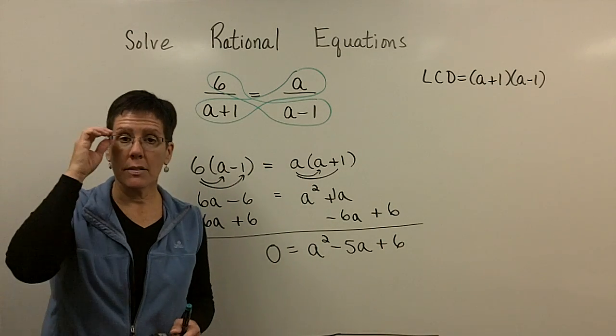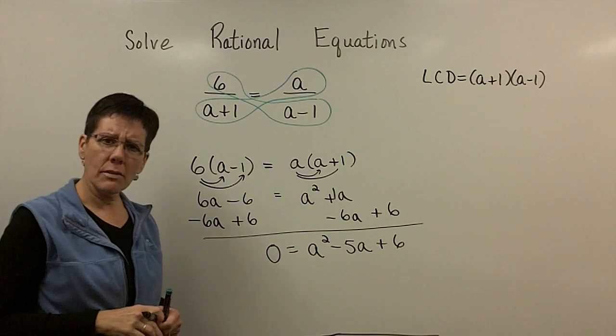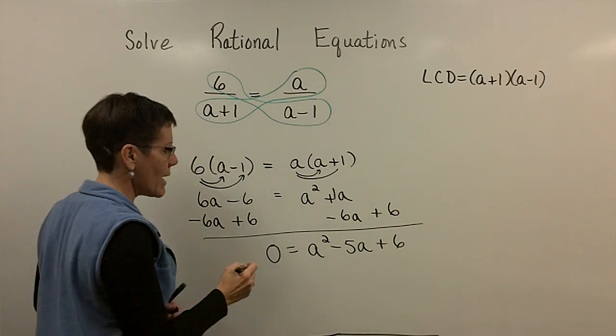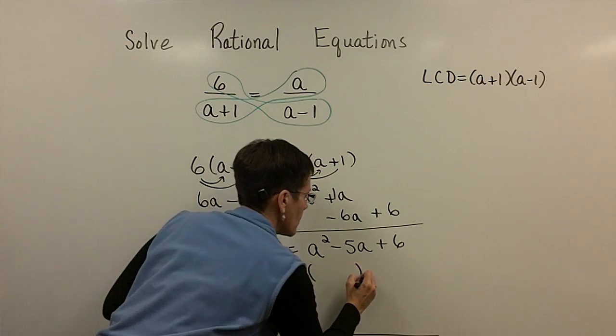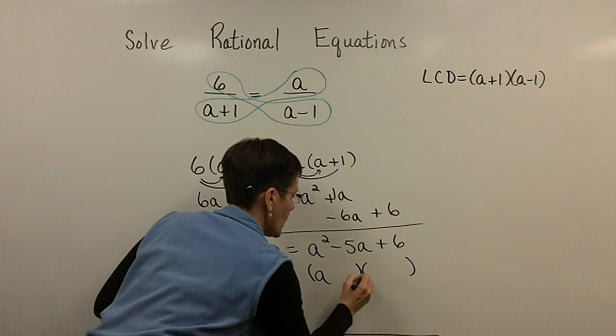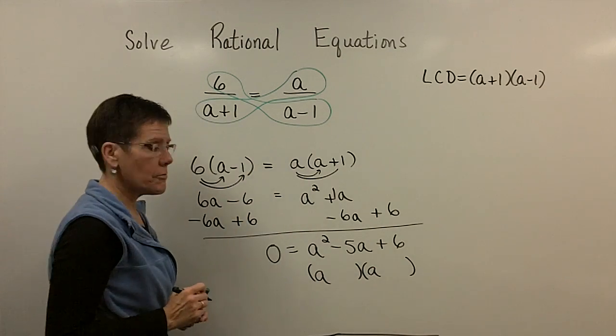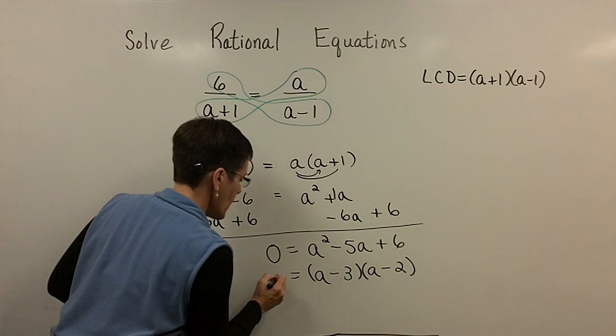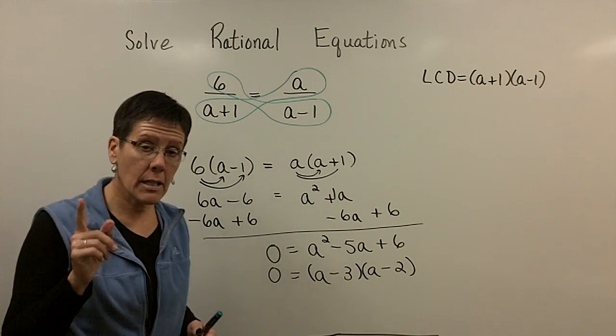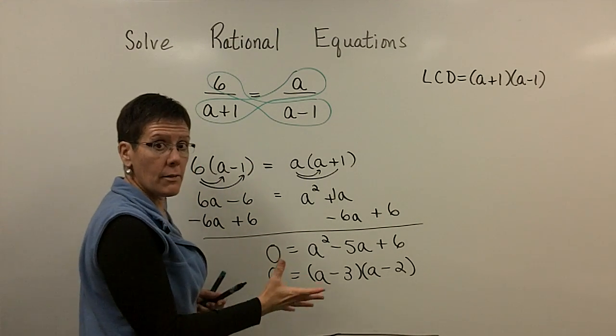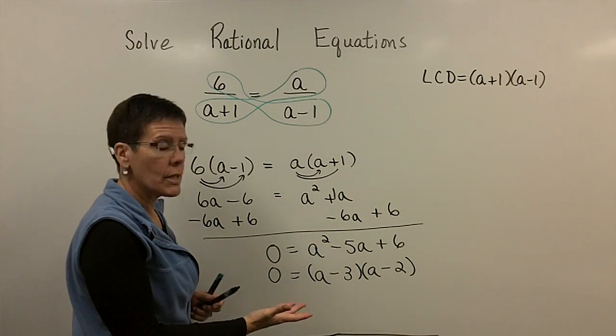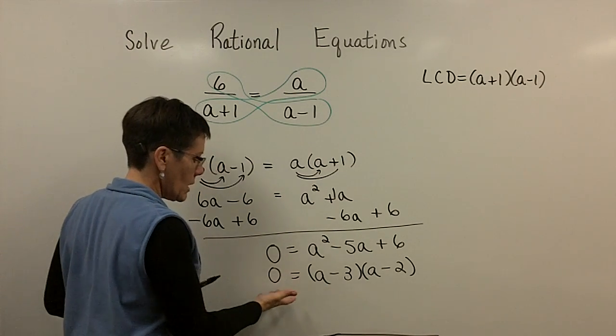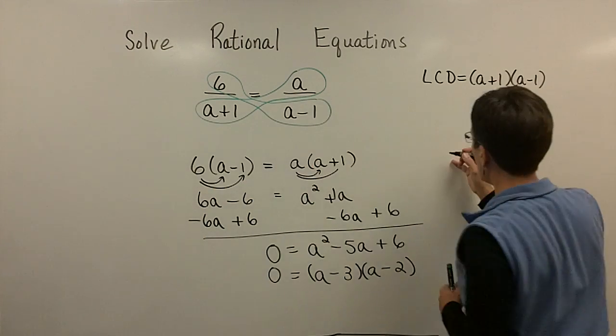And again, I'm going to pause and say, oh gee, I can factor that thing. So I can find two numbers whose product is a positive 6 and adds to be a negative 5. I think those two numbers are a negative 3 and a negative 2. And remember, the zero product rule says that at any given time, you set any of the factors that contain the variable equal to 0. So I'd set the a minus 3 equal to 0 to find one of my solutions.